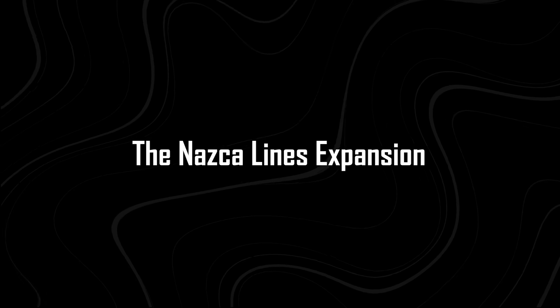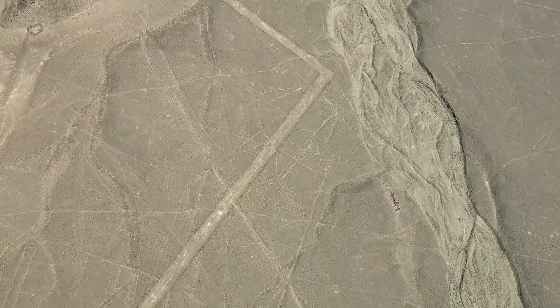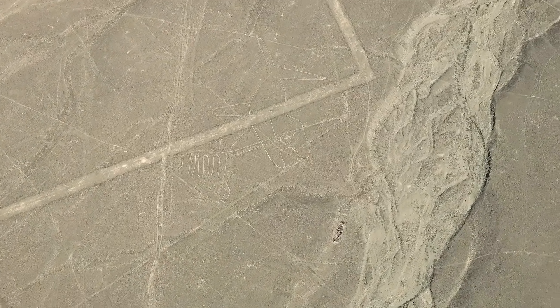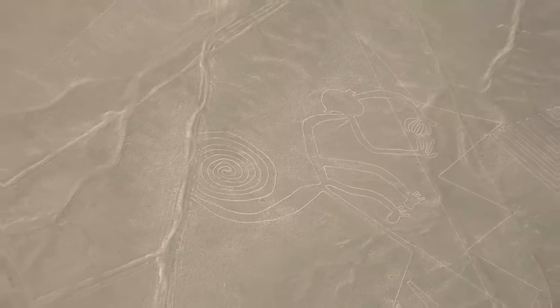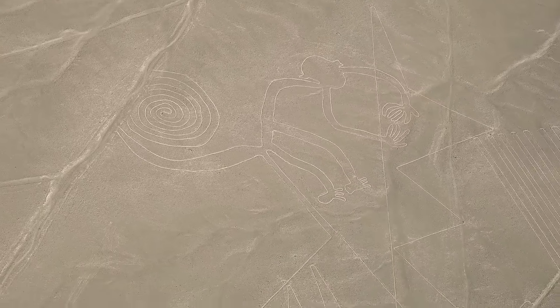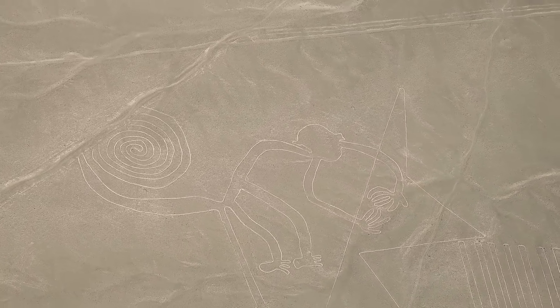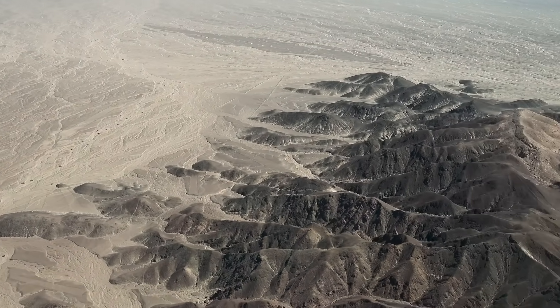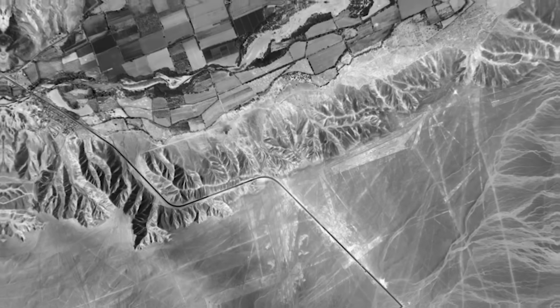The Nazca Lines Expansion. For more than a century, the Nazca Lines in Peru have fascinated and confused archaeologists. These massive desert drawings of animals and symbols stretch for miles, yet no one really knew how many existed or what they meant. In 2023, researchers at Yamagata University used AI to scan thousands of high-resolution aerial photos of the Nazca desert.